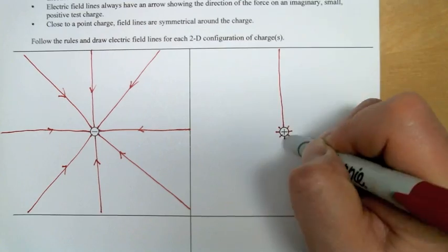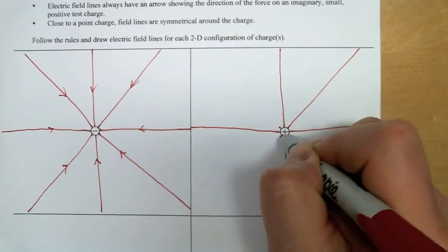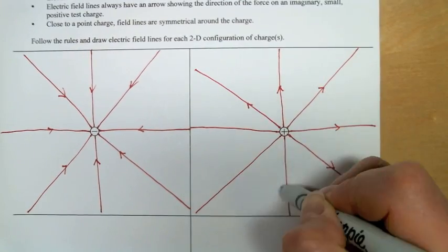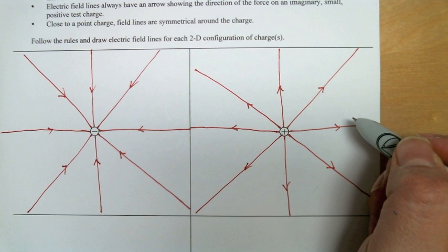Once again, eight lines. Mark symmetrical places to start them, draw them radially, and make the arrows point away from the charge, indicating that a positive test charge would be repelled. Done!